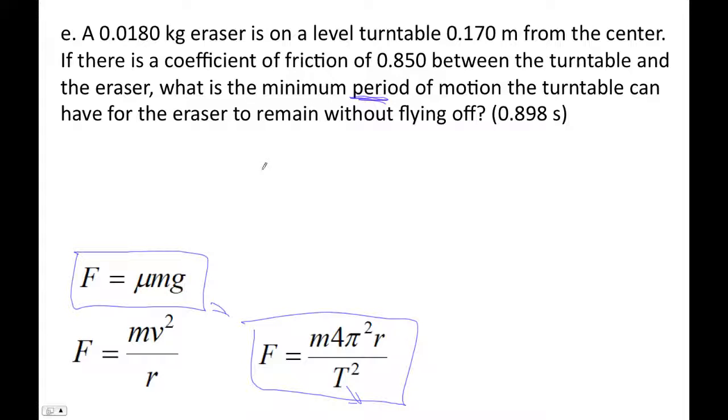We start off with μ times m times g. That's the coefficient of friction times mass times gravity, equal to m times 4π²r over T². The mass cancels, so we don't even need to know the mass. That's kind of fun, huh?